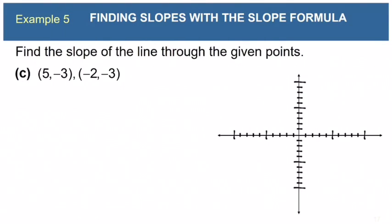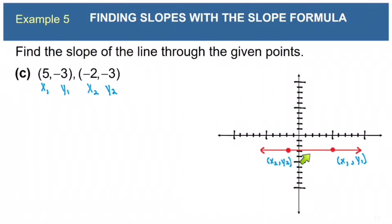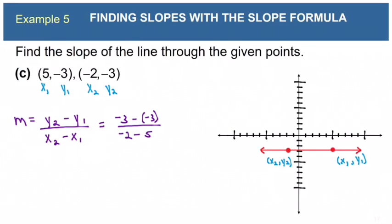Example 5c: the points are (5, negative 3) and (negative 2, negative 3). Plotting them gives a horizontal line. Using the formula: m equals (negative 3 minus negative 3) over (negative 2 minus 5) equals 0 over negative 7, which equals 0. Zero divided by any number is 0, confirming the slope of a horizontal line is 0.